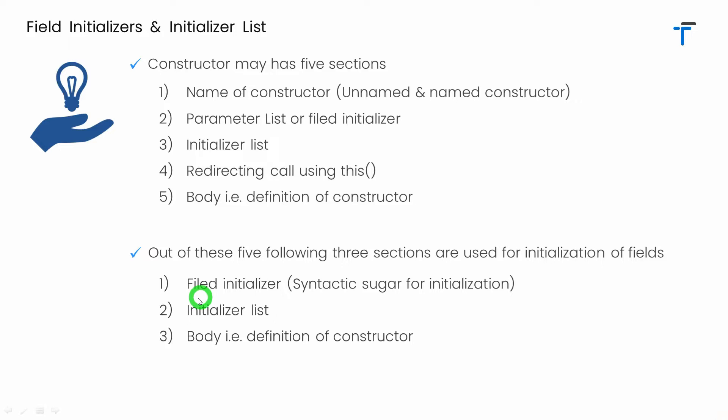The first section is called field initializer, famously known as the syntactic sugar for initialization — written using this.someVariable inside the parameter list of constructors. The second option is using the initializer list. And the third option is to perform initialization inside the body, that is inside the definition of the constructor itself. In this video, I will talk about the significance of each of them.